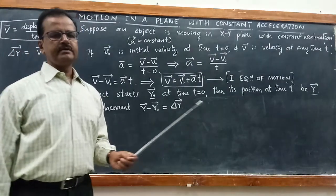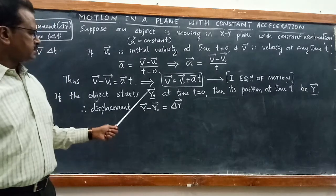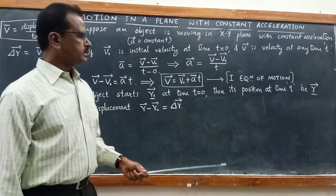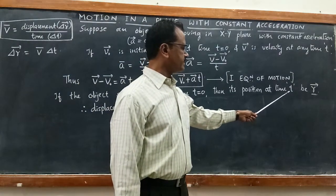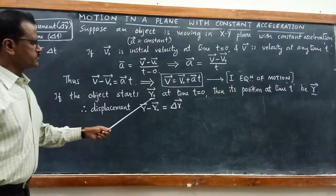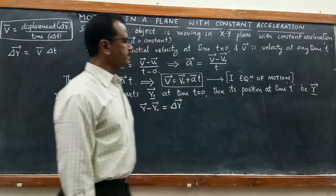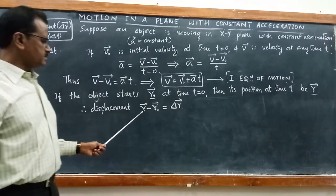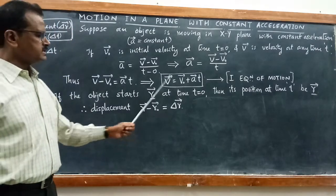Let r₀ be the initial position vector at time t = 0, and let r be the final position vector at time t. When the object has initial velocity v₀, its position is r₀; when it has final velocity v, its position is r. Displacement is vector r minus vector r₀, which gives Δr.